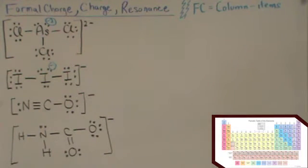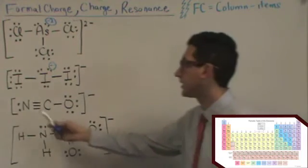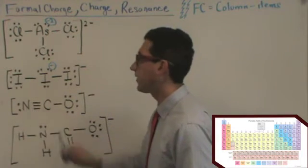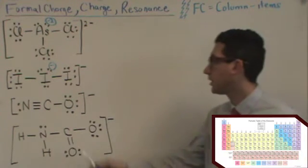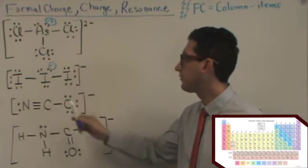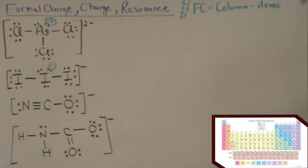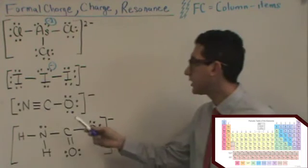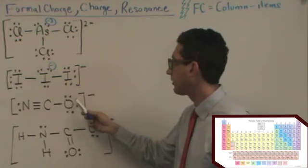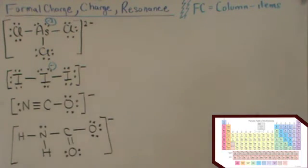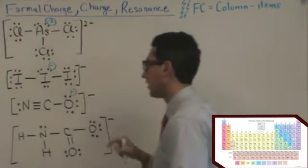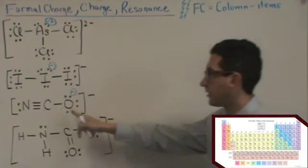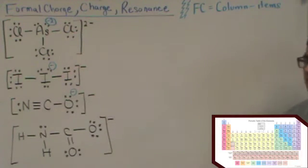So, let's take a look at the next example. Nitrogen's in column 5, and you'll see 1, 2, 3, 4, 5 items around it. So, that's 0 for its formal charge. Carbon is in column 4. You'll see 1, 2, 3, 4 items around it. So, that'll have a zero formal charge. But for oxygen, it's 1, 2, 3, 4, 5, 6, 7 items. And oxygen's in column 6, so 6 minus 7. This oxygen will have a minus 1. And you'll see the sum of the individual formal charges will equal the overall charge of the molecule.